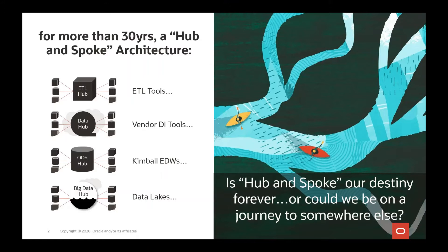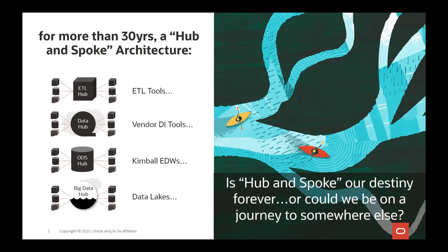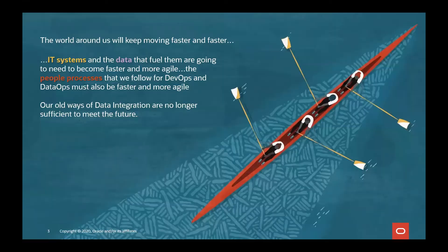Let's begin by discussing a bit about our recent history in data management. Even as we've moved in large scale to cloud computing as the dominant form of technology infrastructure over the past several years, the architecture patterns for how we work with data have largely remained the same for around the last three decades. From ETL tools to data marts, data warehouses, and cloud-based data lakes, the hub-and-spoke pattern has really been the dominant form of data architecture — tried and true, tested, and well understood. The question we want to explore is: is hub-and-spoke really the end-state destiny for data management, or is there another way emerging?